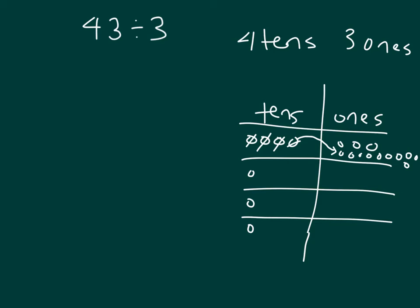Alright, now what do we do? We have 13 ones there, and we're dividing those 13 ones now into 3 groups. 3, 6, 9, 12. So we're left with our remainder there of 1.